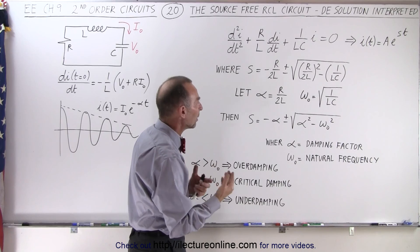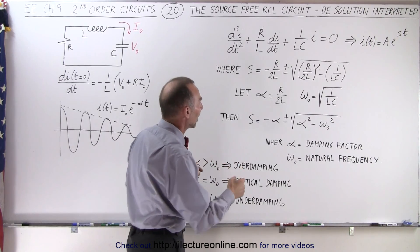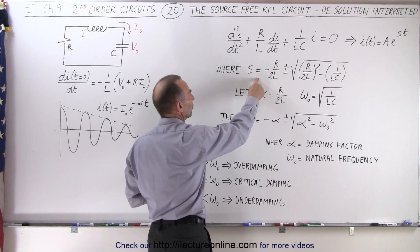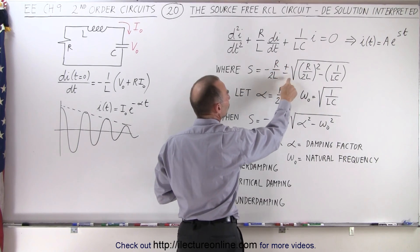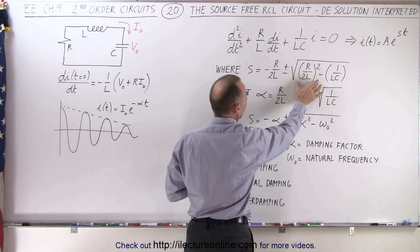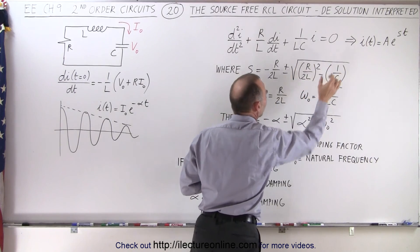We found a way in which we can then solve for s as a quadratic equation where s was equal to minus R over 2L plus and minus the square root of R over 2L quantity squared minus 1 over LC.